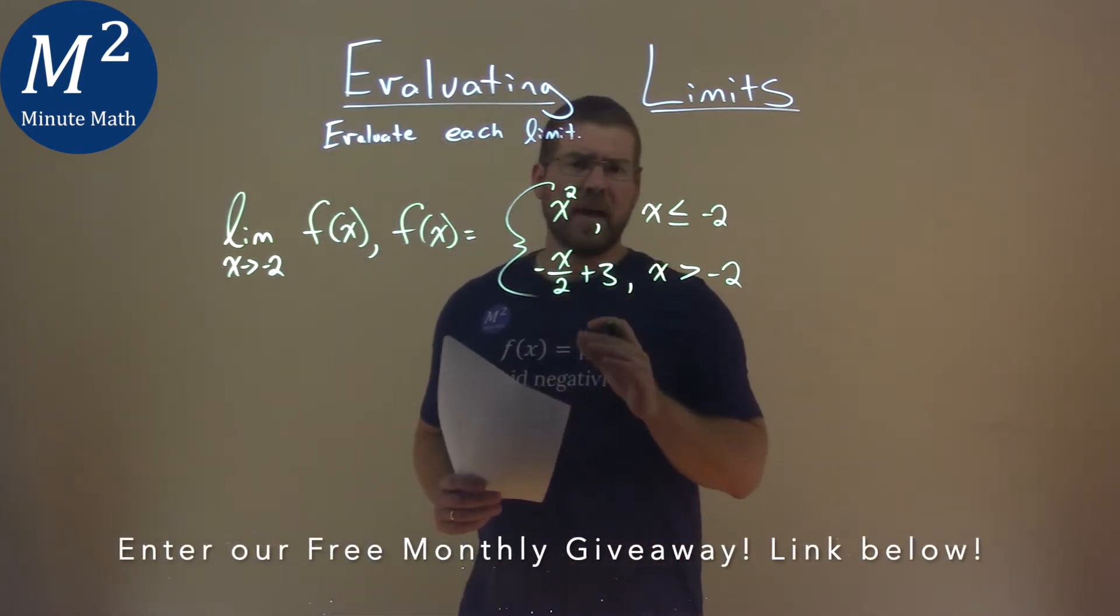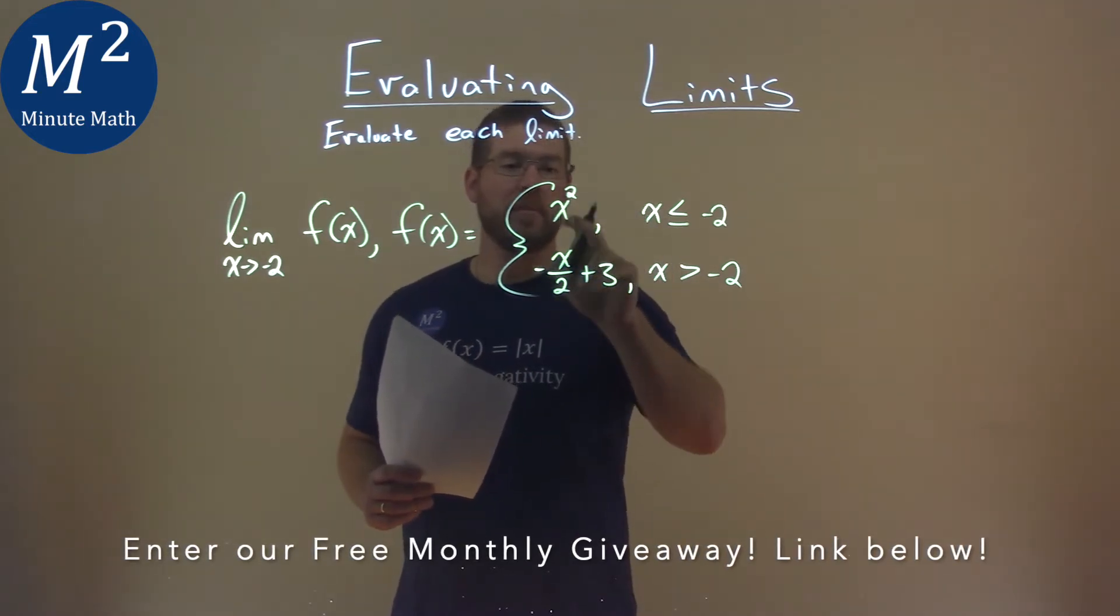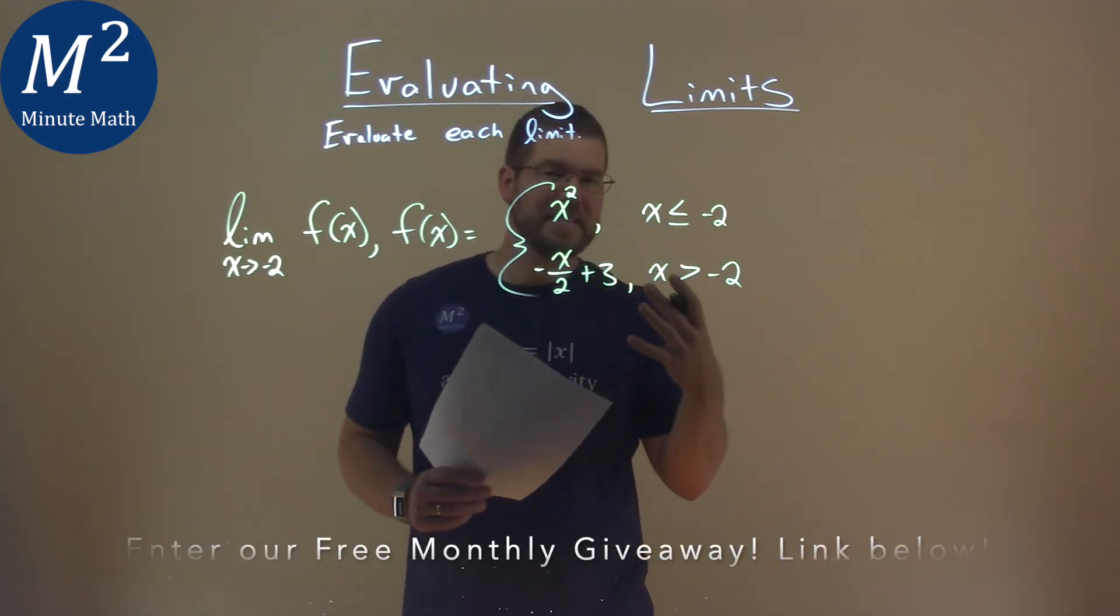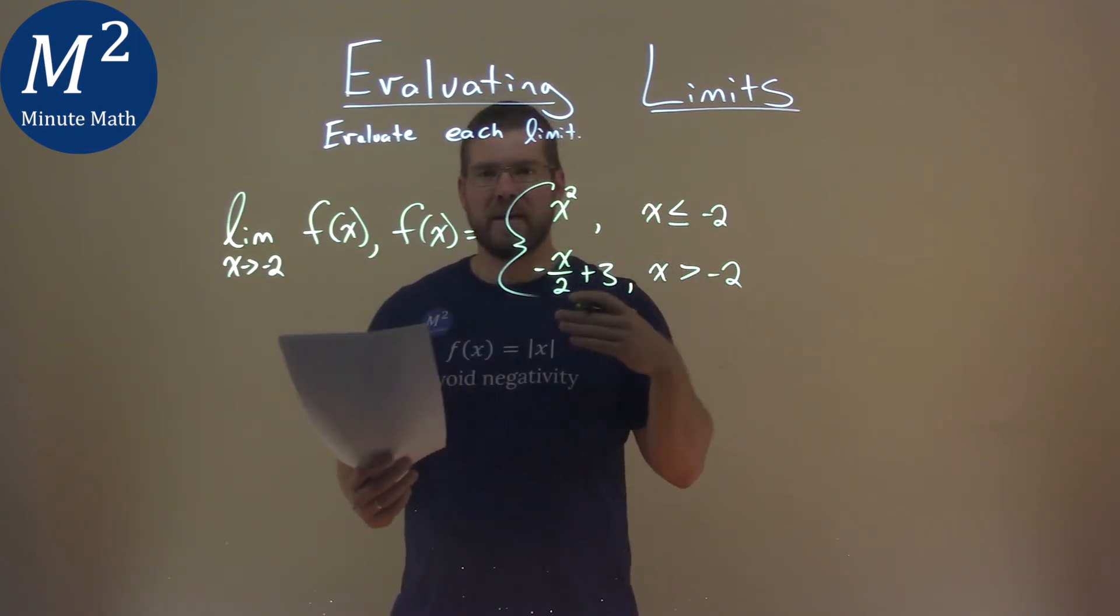So that allows us here to evaluate this limit by just plugging a negative 2 for both of these x's, and we can see that whatever the output is, is where they're approaching from the respective left and right here.